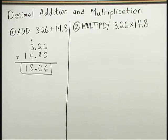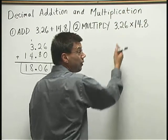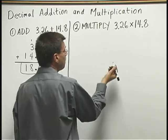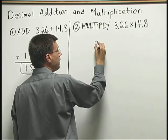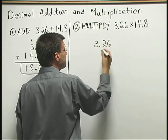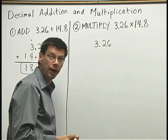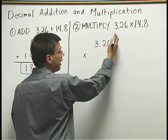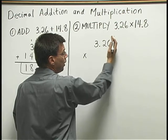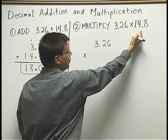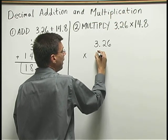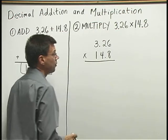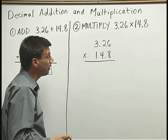Now let's multiply. We're going to multiply 3.26 times 14.8. I'll write down one of the numbers, 3.26. And when you multiply, you don't have to line up the decimal points. I can line up both numbers at their right ends. So when I write times 14.8, I can write 14.8 just like so. I do not need to line up the decimal points when I multiply.